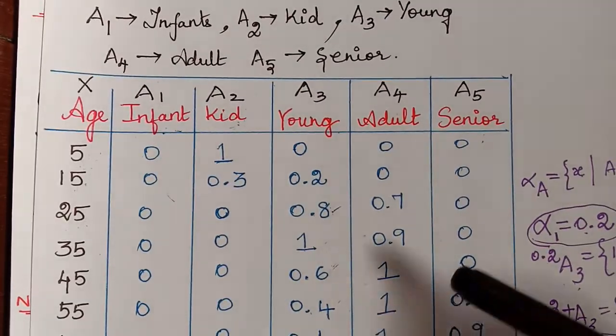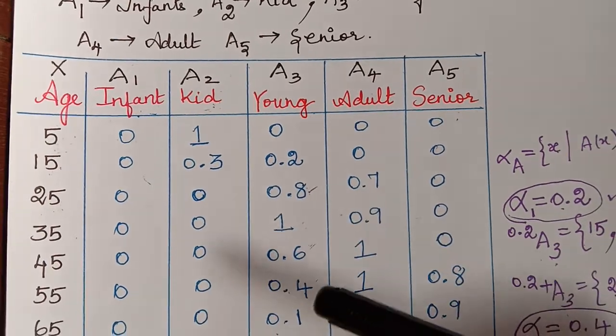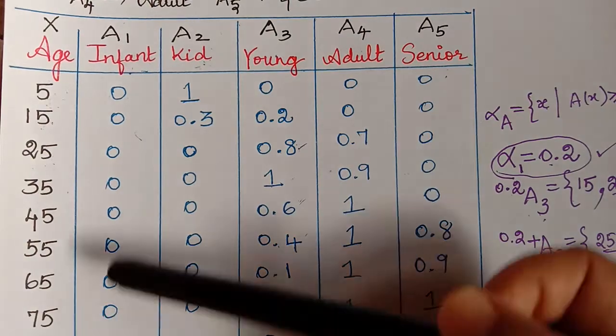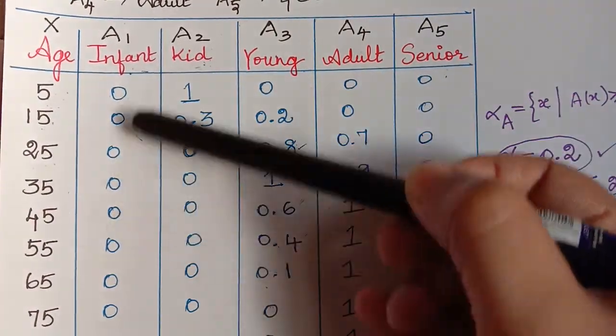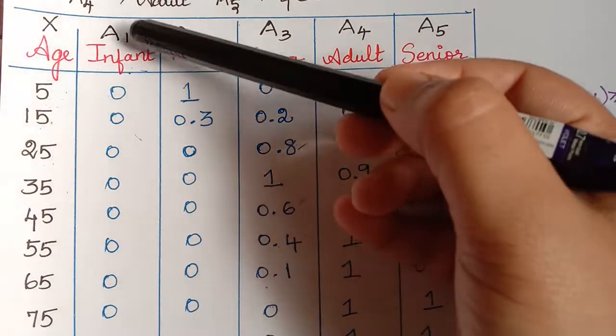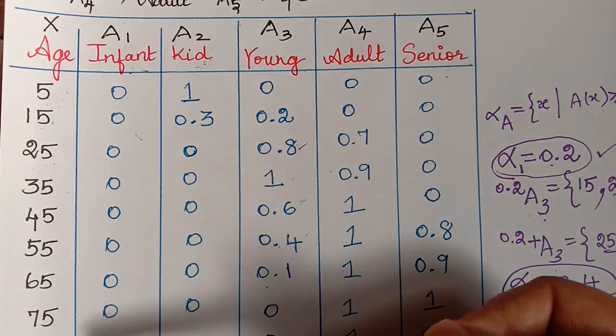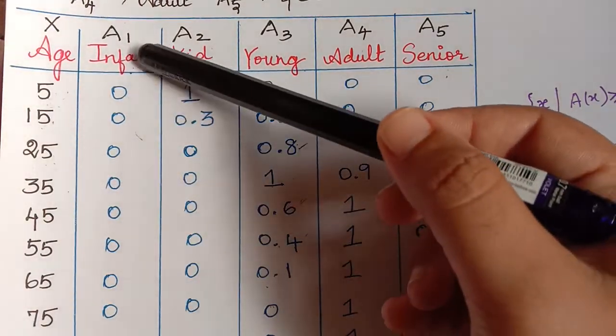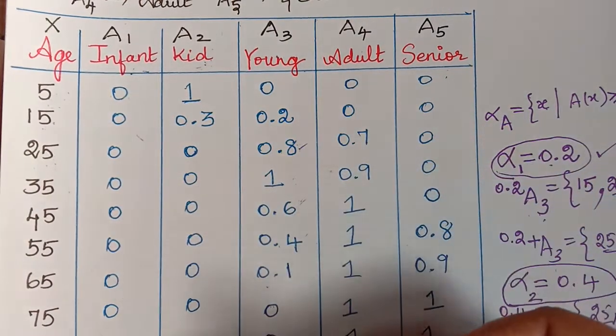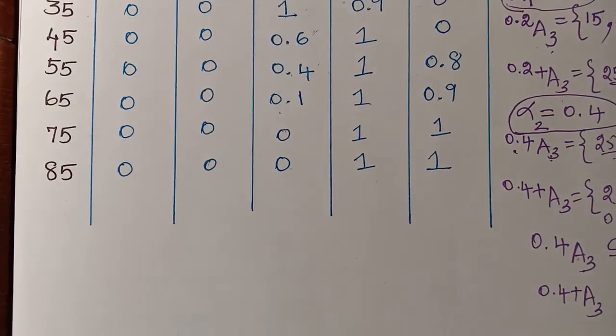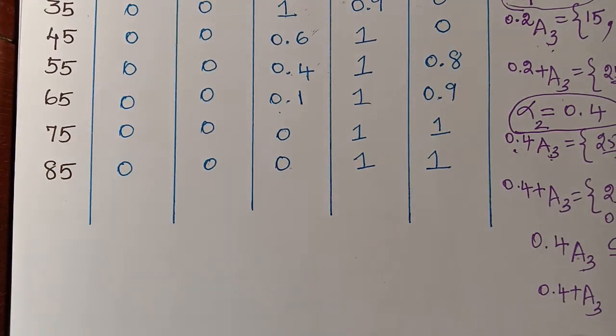We use the same example which we used to learn the alpha cut. A1 is a fuzzy set. If we see the membership grades of A1, the support of A1 will be those elements of the crisp set whose membership grades are greater than 0. But for A1, all the membership grades are 0, so therefore the support of A1 is the null set.